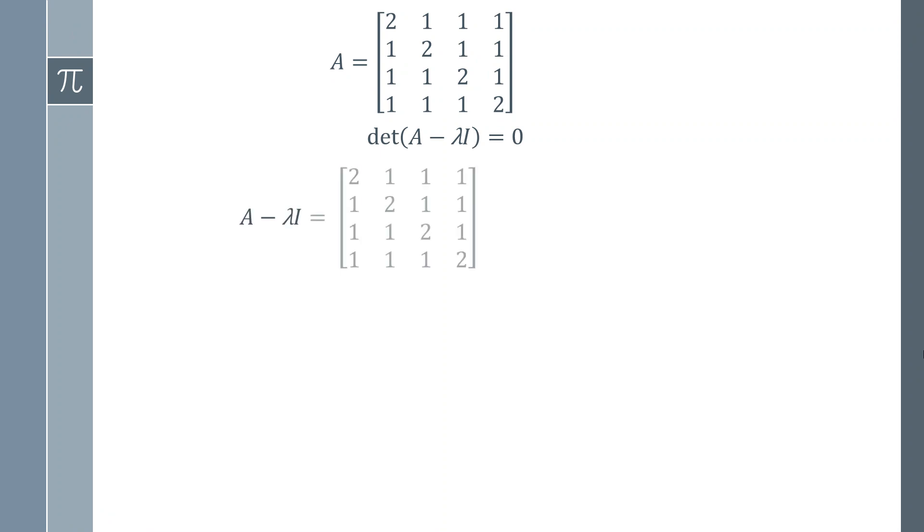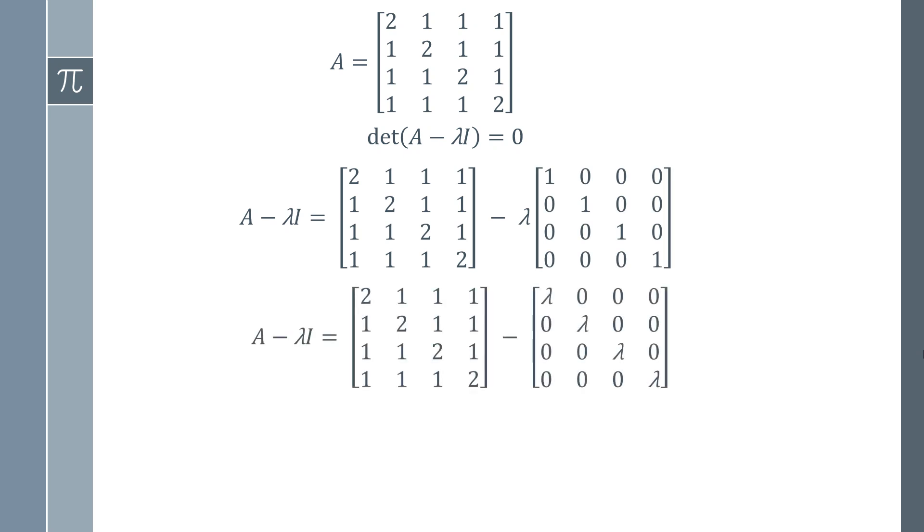So we find A minus lambda I very simply. There's matrix A minus lambda times I. We can just multiply the lambda across the leading diagonal and do the subtraction and we get this simple matrix.